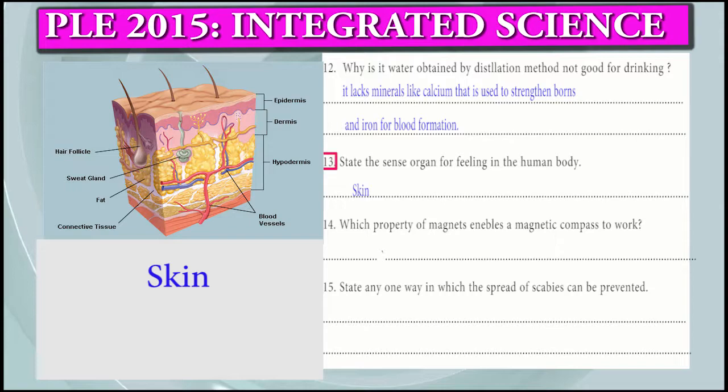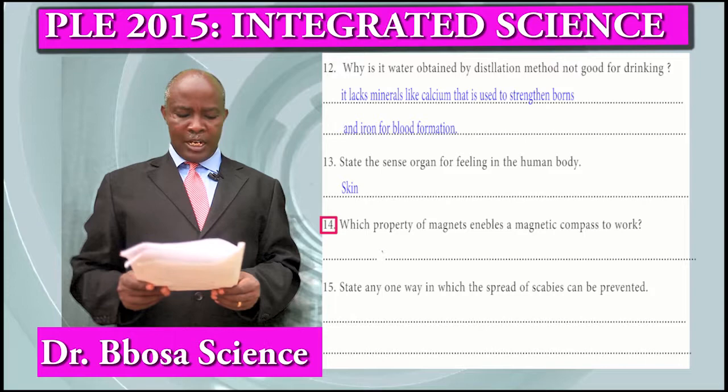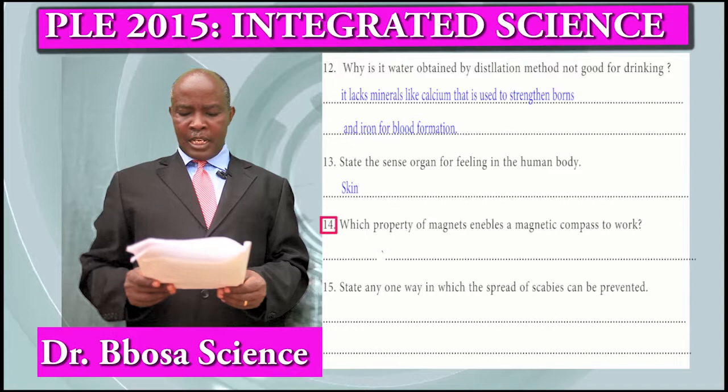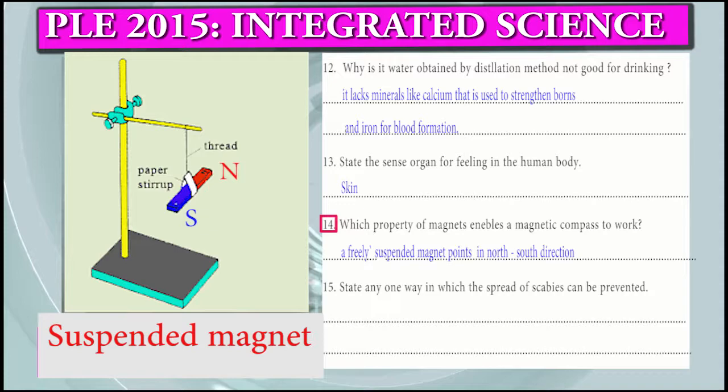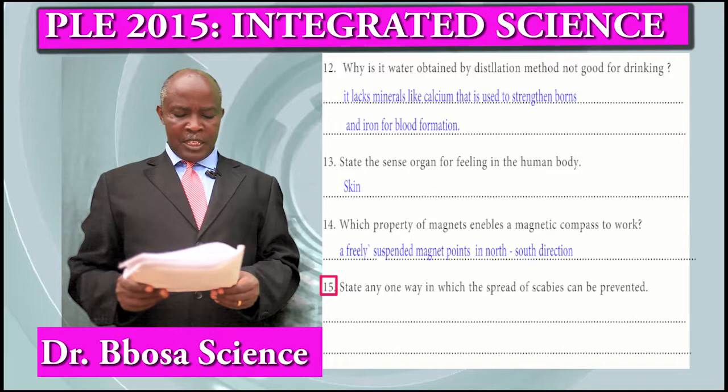Question 14: Which property of a magnet enables a magnetic compass to work? When freely suspended, the magnet points to the north and south pole.